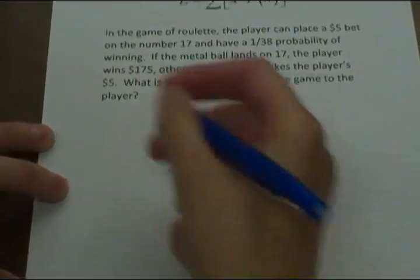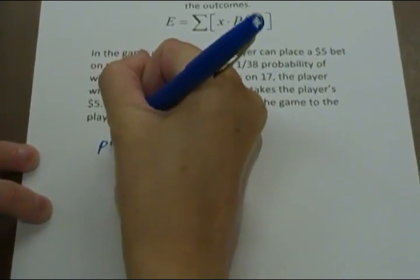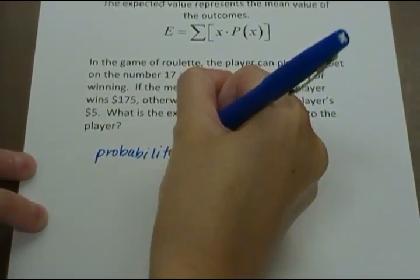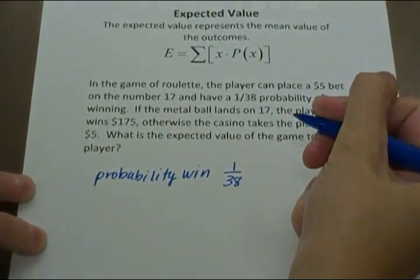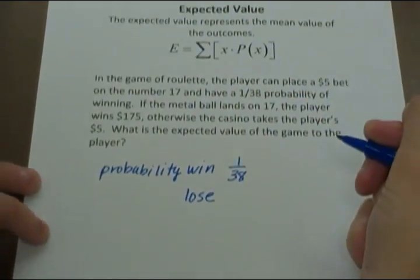First thing we need to do is talk about the probability. The probability of a win is 1 out of 38. But what is the probability of a lose?